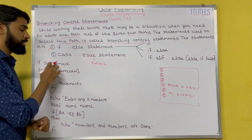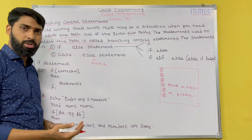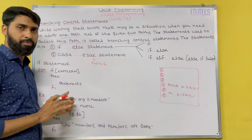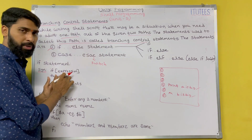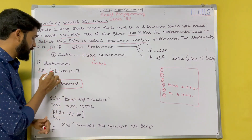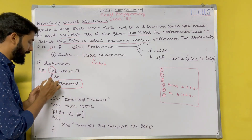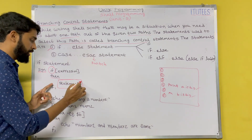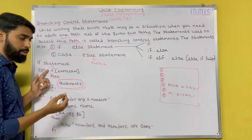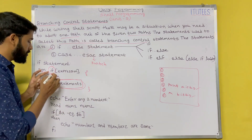First is the if statement. What is its purpose? If you provide some expression and the expression is true, then you are going to execute the if block. Otherwise, you don't enter into the if block. This is the syntax: the if keyword, then in square brackets you give the expression, followed by the 'then' keyword, then the statements, and you terminate this if block with 'fi'. In C language we use open and close brackets; in shell programming, we use if and fi.